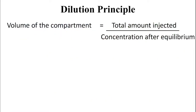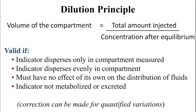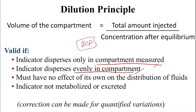The key requirement is that the dye we choose must stay only in the compartment we intend to measure. If you want to measure the extracellular fluid volume, the dye injected should stay only in the extracellular fluid and should not enter the cell. It should also disperse evenly within the compartment — for example, it should not accumulate more in the interstitial fluid and less in the plasma within the ECF, as that would give a wrong value.